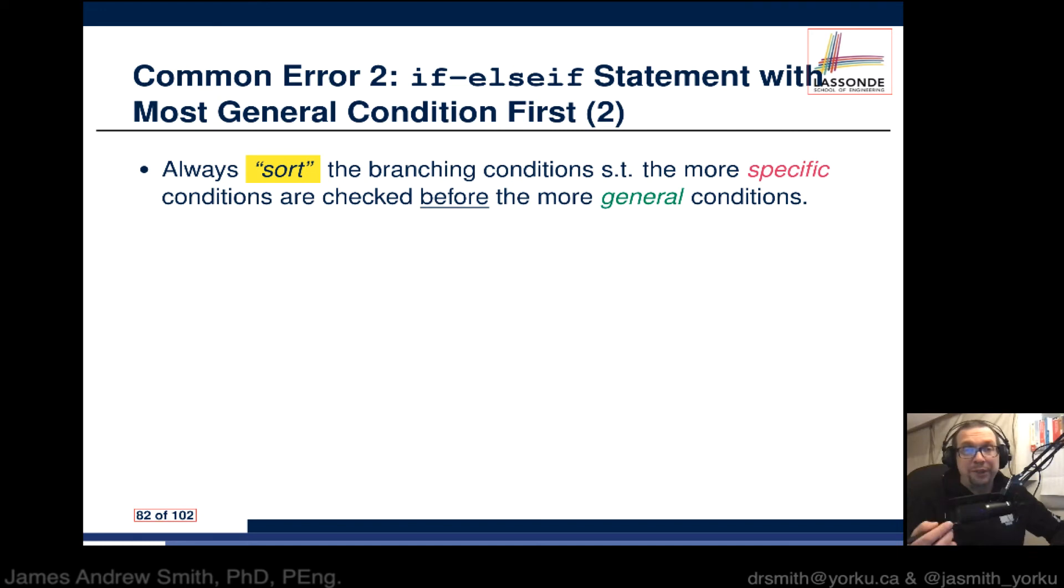So how do we fix this? We always want to sort the branching conditions such that the more specific conditions are checked before the more general conditions.